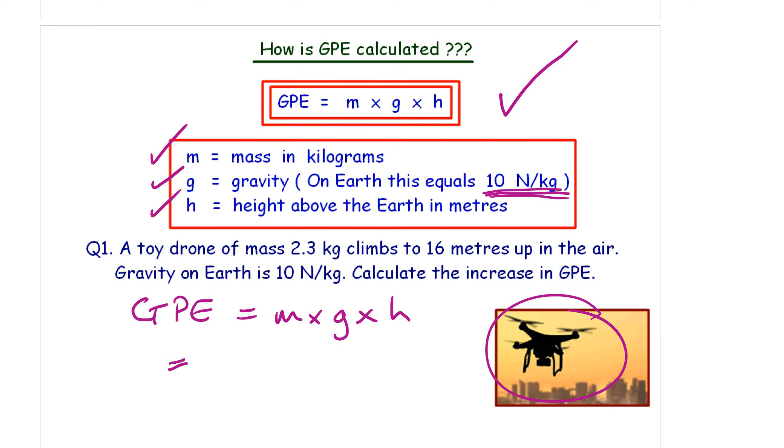M, 2.3 kilograms. Multiplied by G, 10 on Earth. Multiplied by H. It climbed up 16 meters. Then, finally, we put in our answer. Pause it. Put in the answer. It is 368. And the units for energy, big J, joules. And for those that are interested, I can convert that into kilojoules. Little k, big J. You divide this number by 1,000. And you get 0.368 kilojoules. Same number.